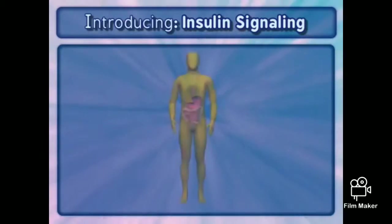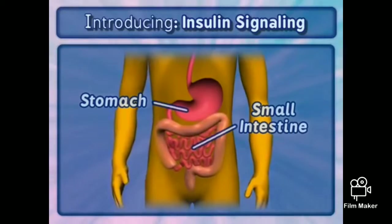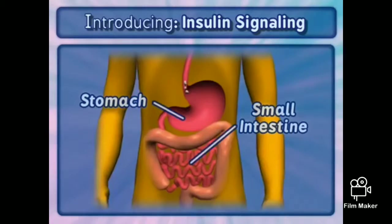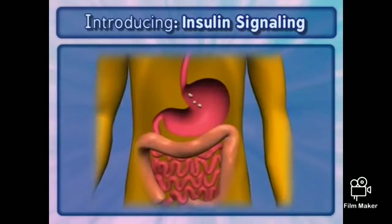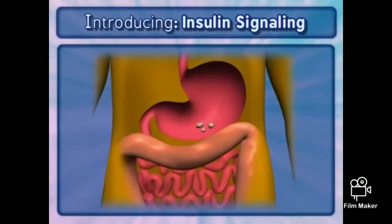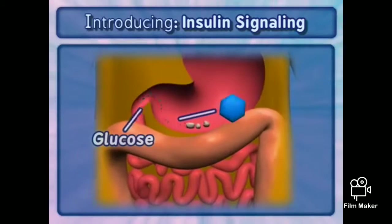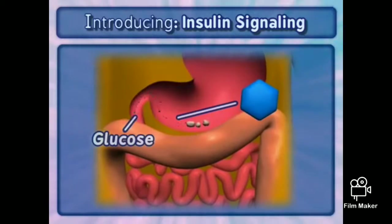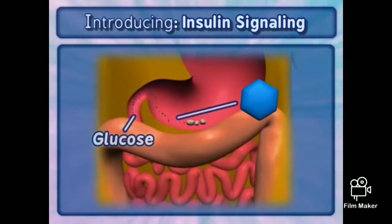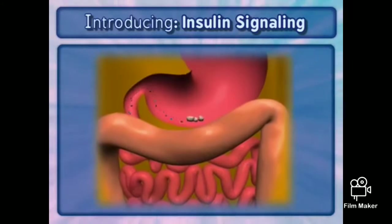Glucose is a good example. It is a critical product of digestion and an essential energy source for cellular metabolism. This energy is produced when glucose is used as a substrate for glycolysis and then the Krebs, or citric acid, cycle.